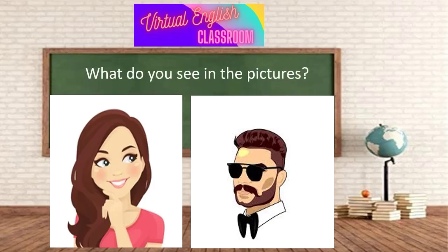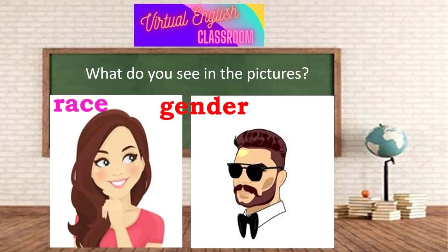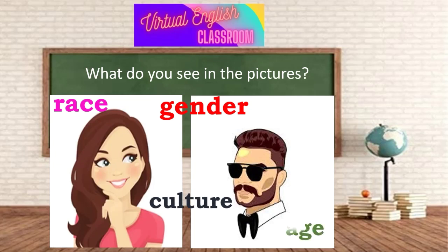What do you see in the pictures? Correct, you see pictures of a woman and a man. How do gender, race, culture, and age play a great role in influencing others' thoughts? These are some of the factors that influence stereotyping people.